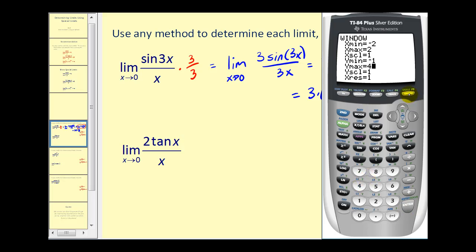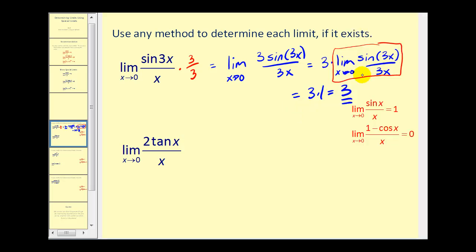And it's pretty easy to see now that as x approaches zero from the right and the left, the function value is approaching positive three, which graphically verifies what we found using this special limit.